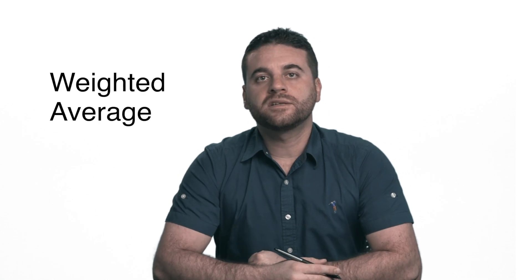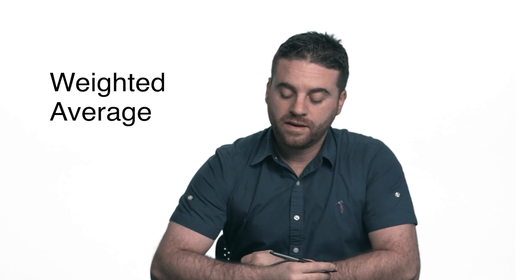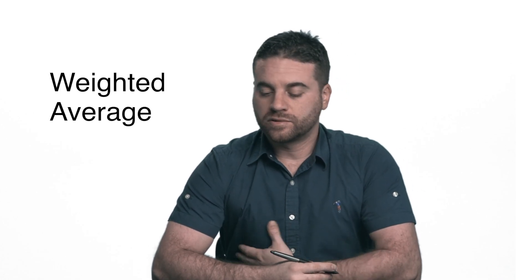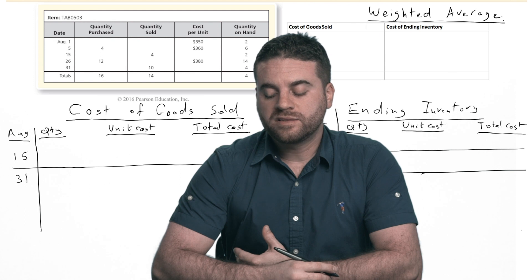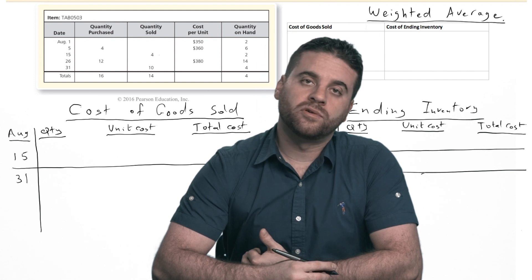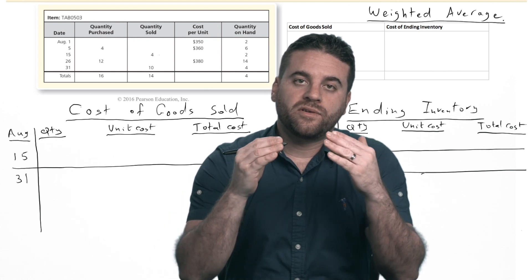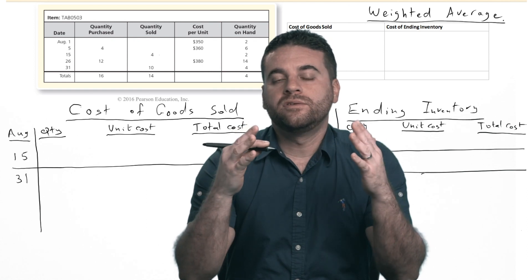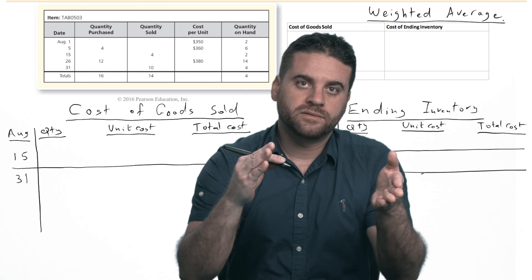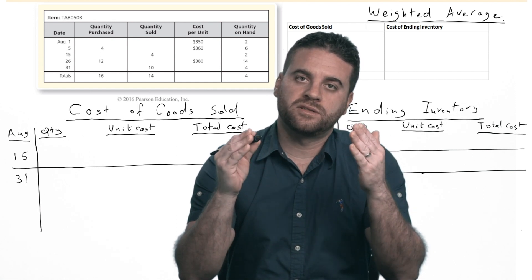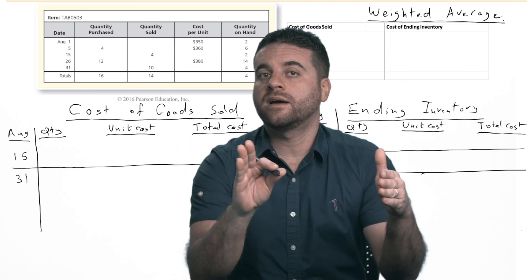We're starting with the weighted average costing method. Our calculation will be different from FIFO and LIFO to calculate cost of goods sold and ending inventory. There's something called cost of goods available for sale — it's the cost of all inventory you had during the period before considering any units sold. It's what you had at the beginning of the period plus all purchases, without subtracting any cost of goods sold.